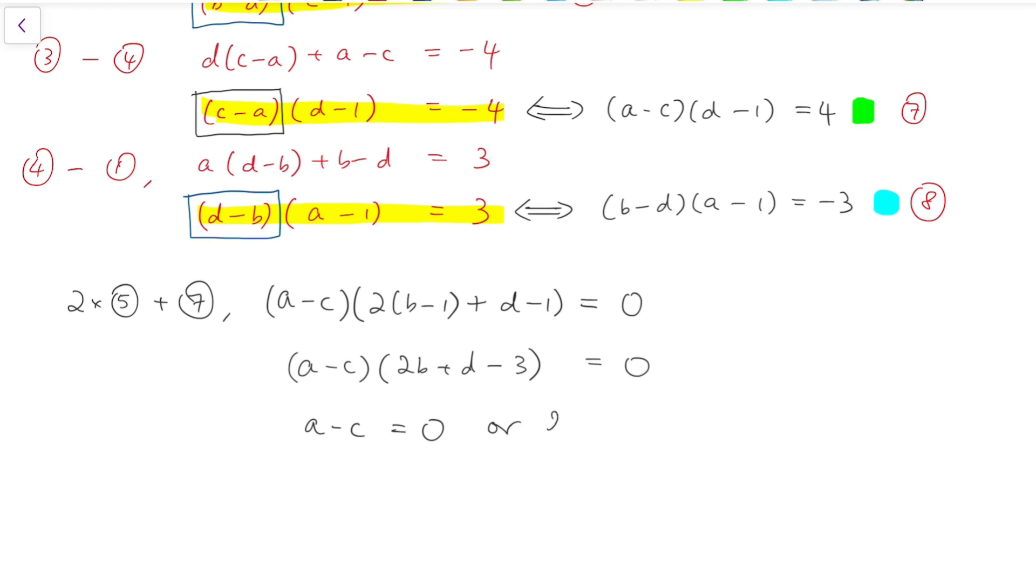That means either one of the two has to be 0. Either a equals c or 2b plus d equals 3. But we know that a cannot be equal to c because if that happens, then we won't have equations 5 and 7 because this expression a minus c multiplied by something else is non-zero. So it has to be non-zero in the first place. So I have to reject this possibility. And so we have 2b plus d equals 3.